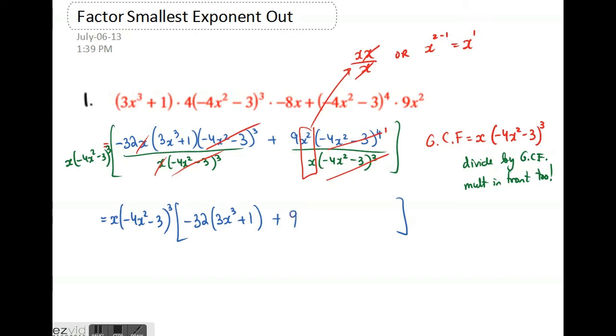So the result would be 9x and negative 4x squared minus 3 with the power of 1, which I'm not going to write. The last thing left to do is to simplify this expression.